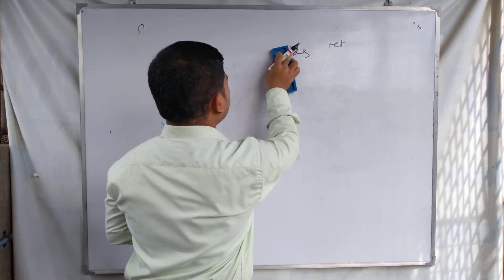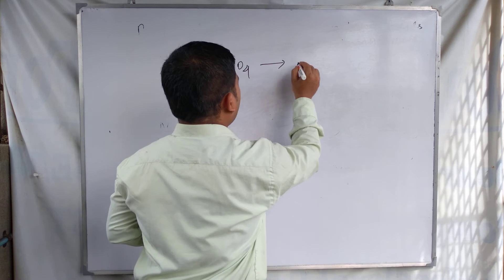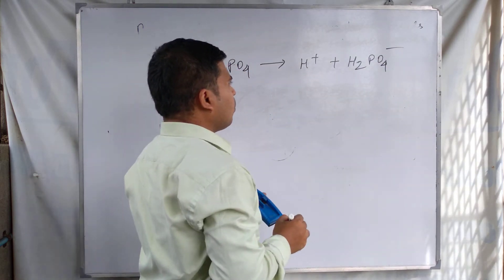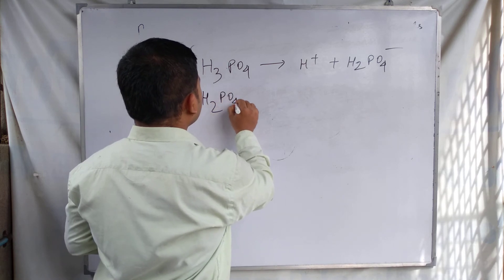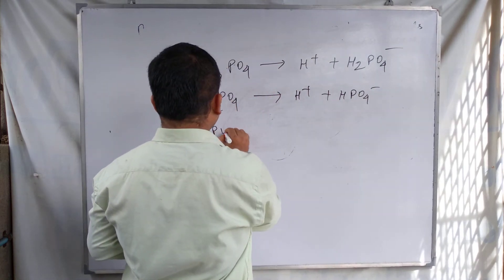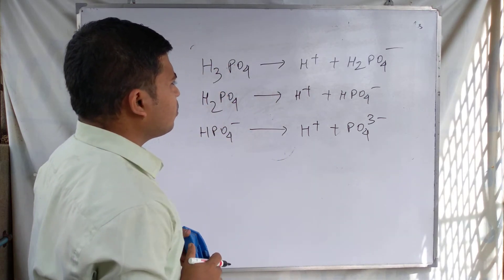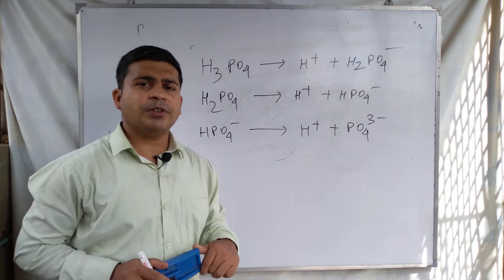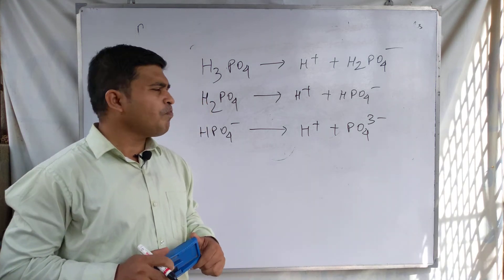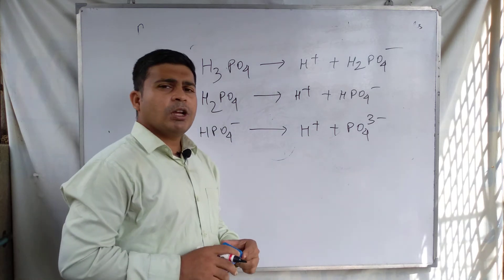H₃PO₄ ionizes in three steps and can produce three types of salts when reacting with a base. First, H₃PO₄ ionizes to form H⁺ and H₂PO₄⁻. In the second step, H₂PO₄⁻ produces H⁺ and HPO₄²⁻. In the third step, HPO₄²⁻ produces H⁺ and PO₄³⁻. It is a polybasic acid that ionizes in three steps, releasing three H⁺ ions — that is why it is called a tribasic acid.